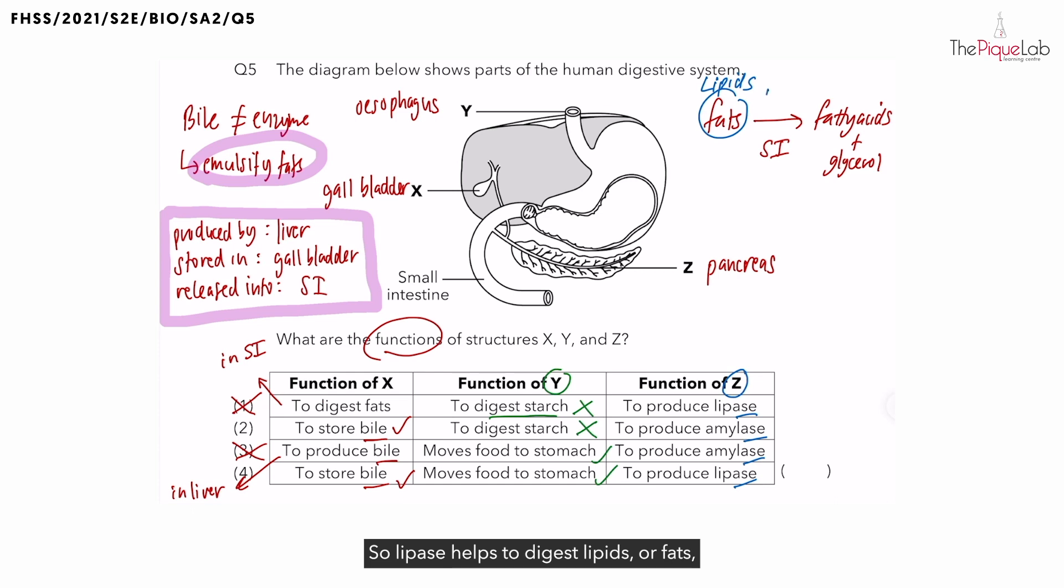And the enzyme name must match the name of the food or substrate. Lipase helps to digest lipids or fats to get fatty acids and glycerol. So lipase is one of the enzymes that pancreas produces.